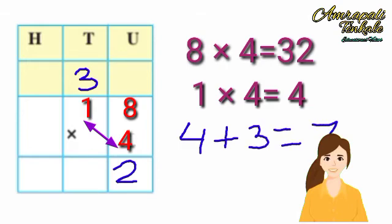And along with the 3 written at the top, we have 7 tens. Write these in the tens place under the line. The product is 72.